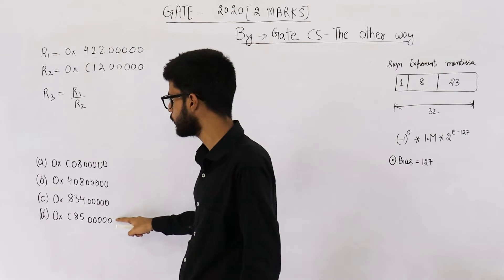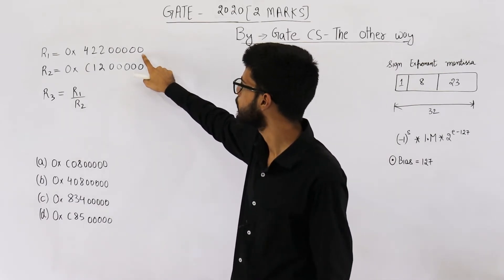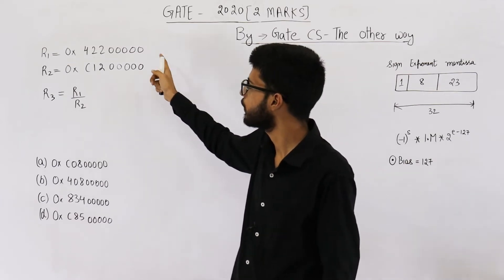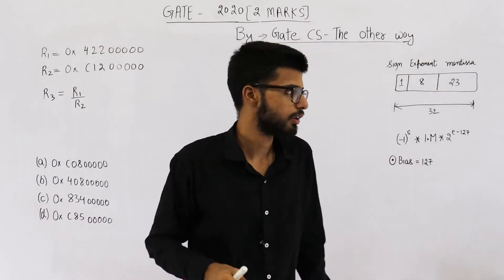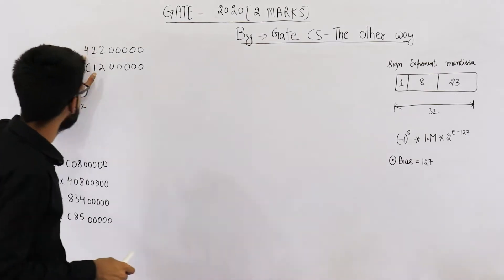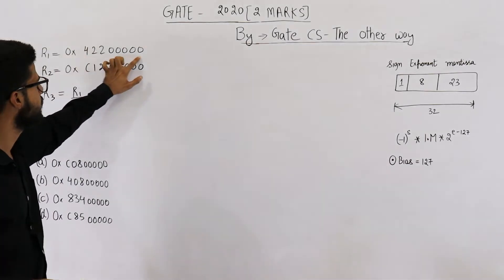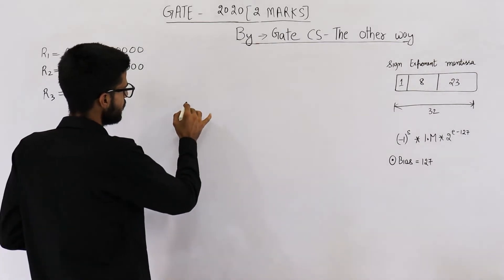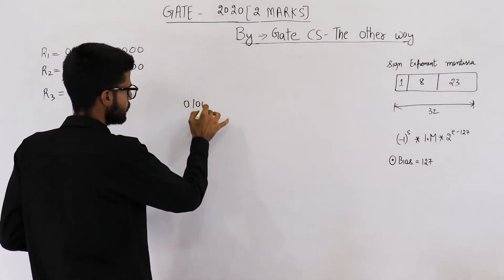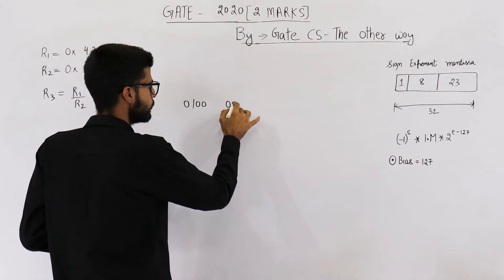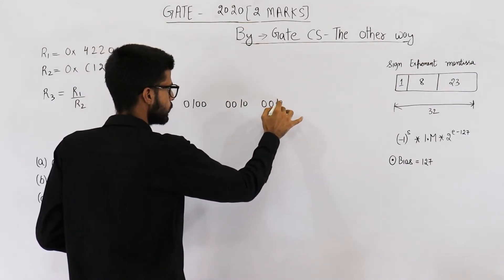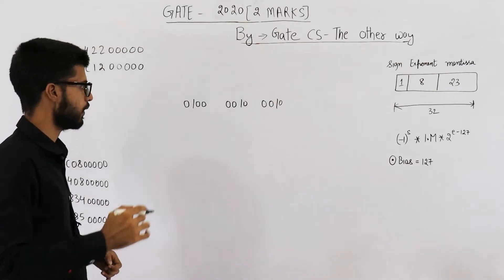First of all, let's see what is actually saved in R1. So the hexadecimal representation is 0x42200000. Four will be 0100, two is 0010, again two is 0010, and then you have all zeros.